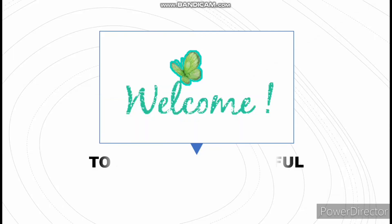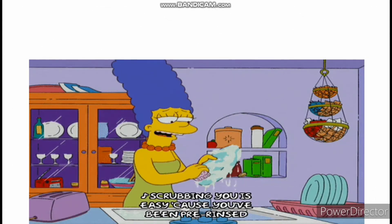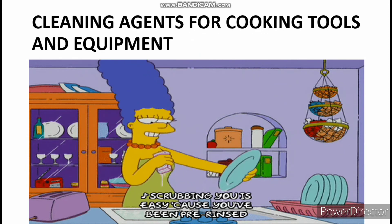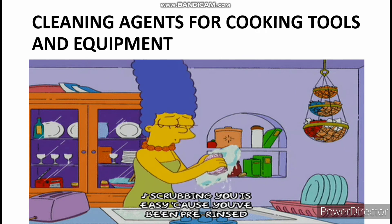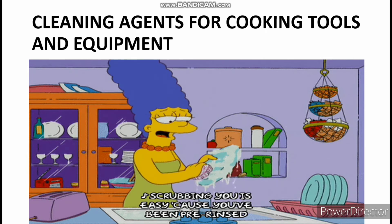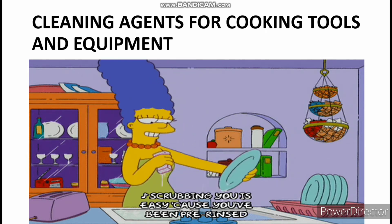Welcome to another wonderful lesson. Last class, we talked about cooking tools and equipment. In today's class, we are learning about cleaning agents for cooking tools and equipment. Equipment and materials for household maintenance are used for removing dust and dirt from various articles and surfaces in the home. As a homemaker, you should learn about these materials and be able to use them very well.